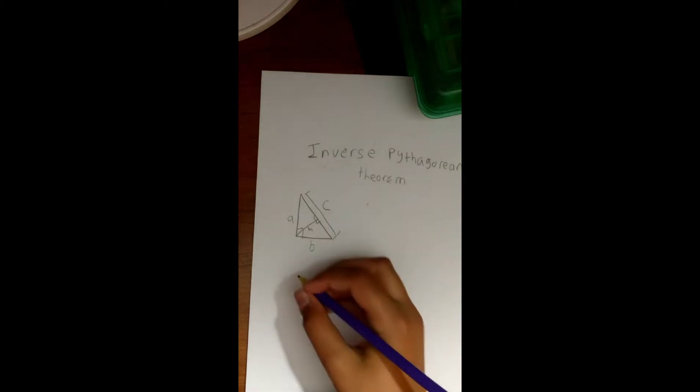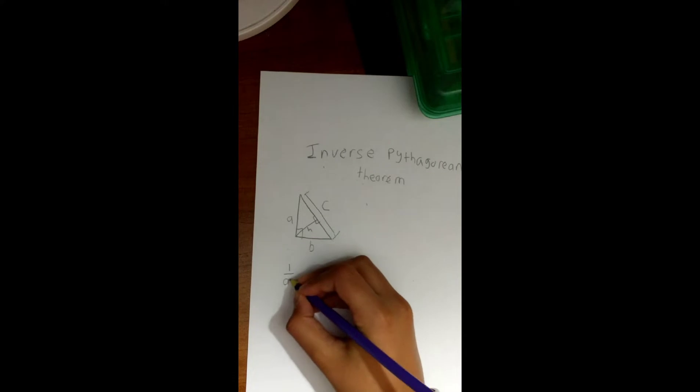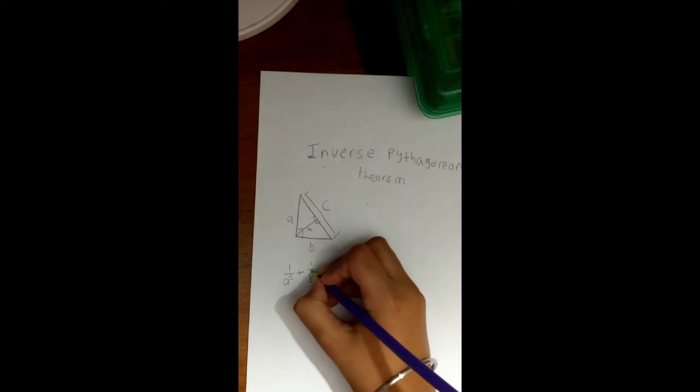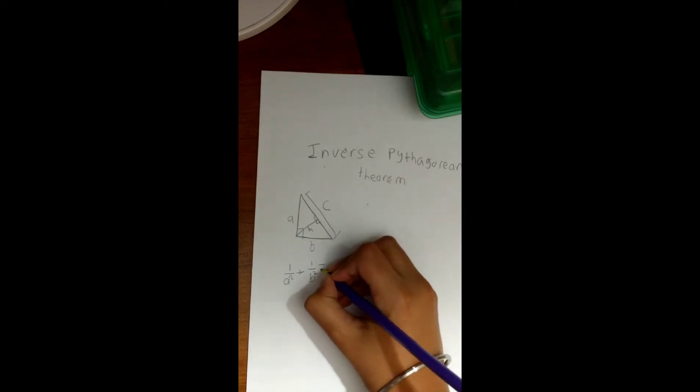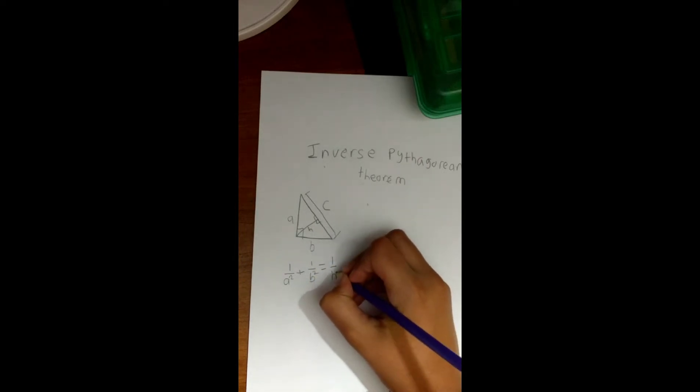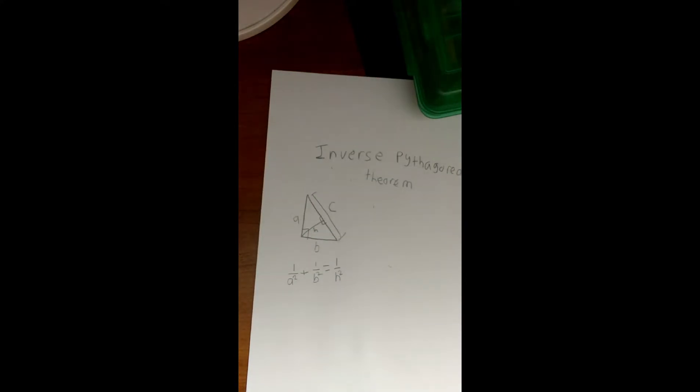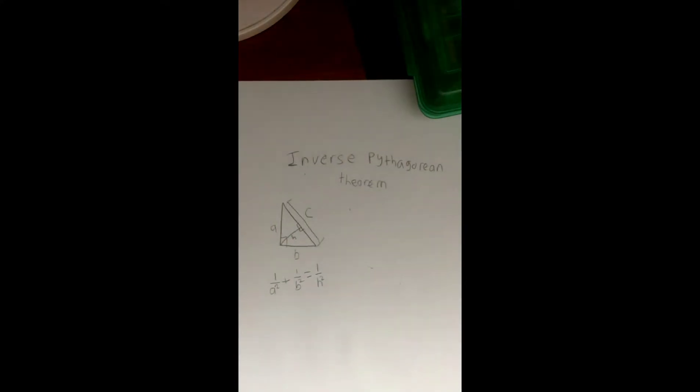Then the inverse Pythagorean theorem says that 1 over a squared plus 1 over b squared equals 1 over h squared. So basically, today in today's video I'm gonna be proving this theorem. It's not going to be a standard geometric proof, but basically it's just a proof that should make sense hopefully.